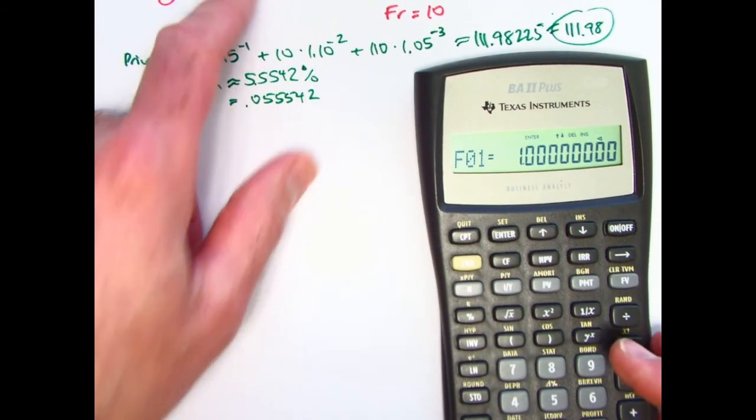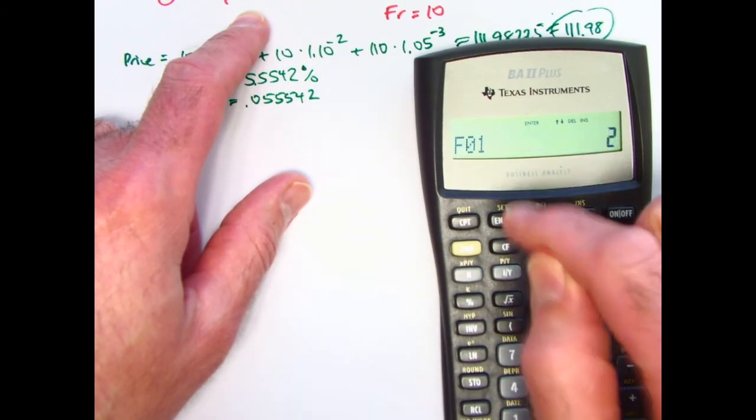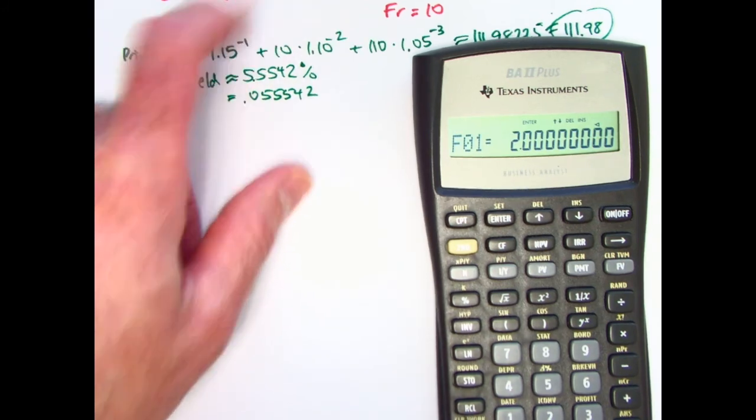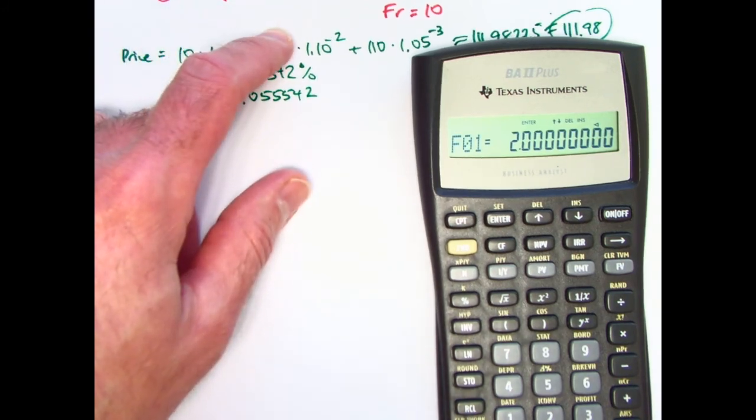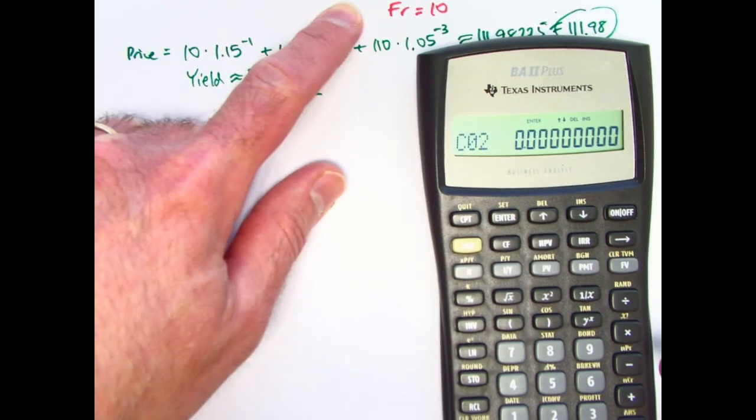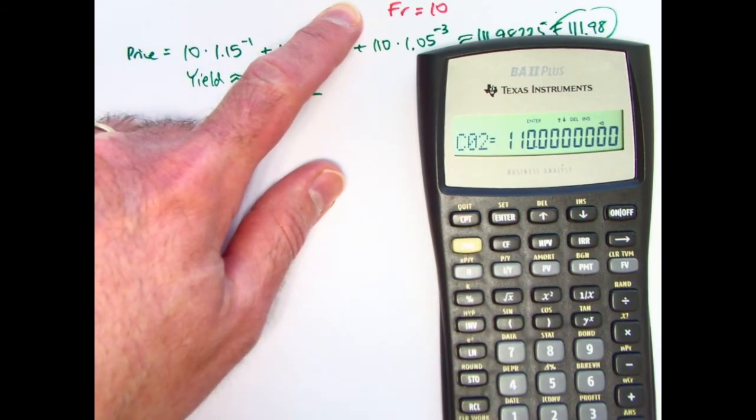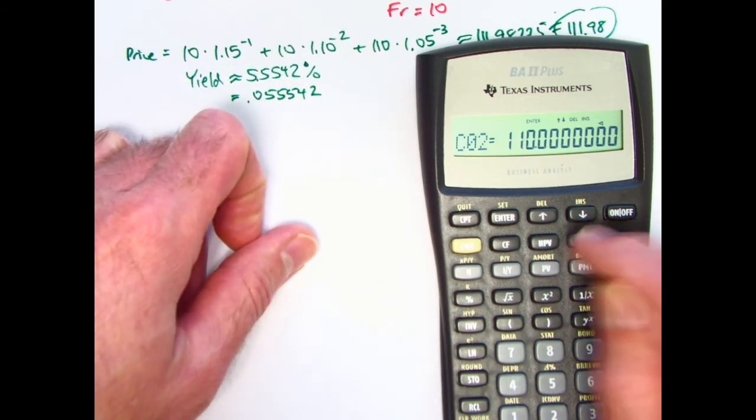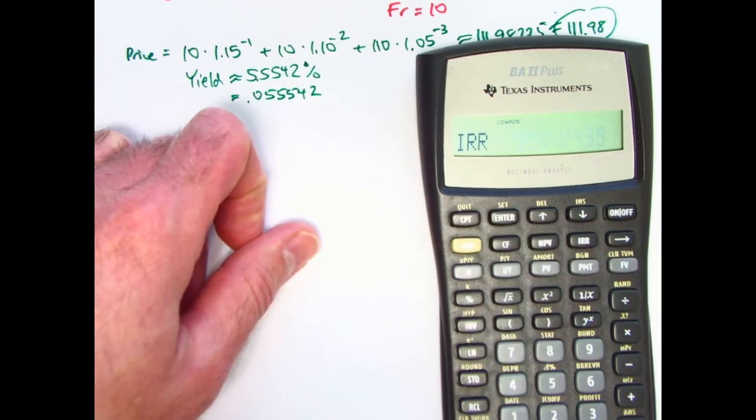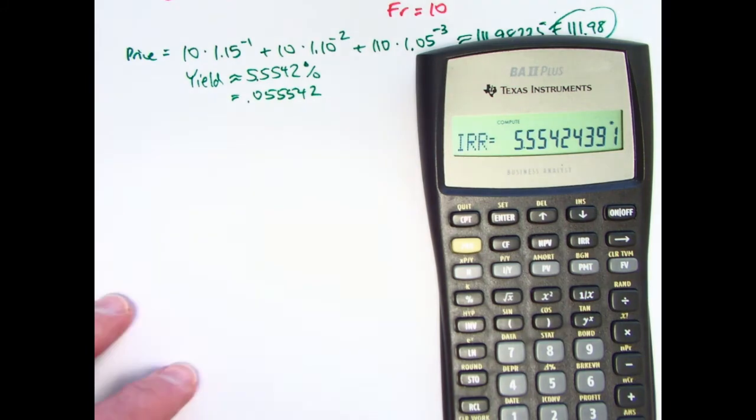I could also just enter the 10 more than once. Tab down, and now for time 3, do 110. Enter that. And then press IRR, CPT, and we get the same answer. Okay? For the yield.